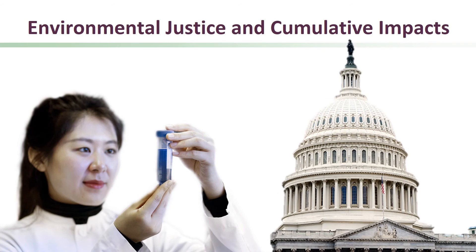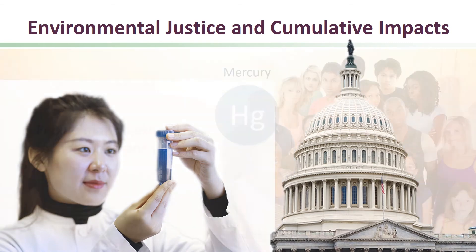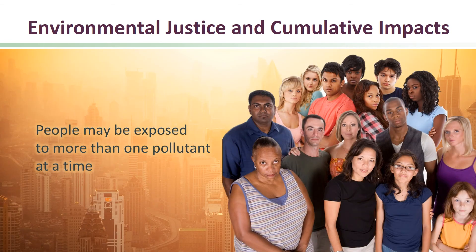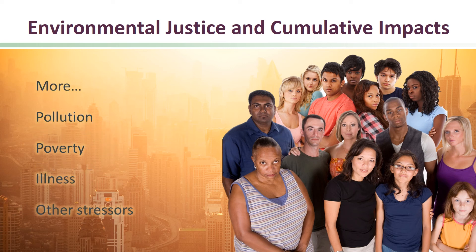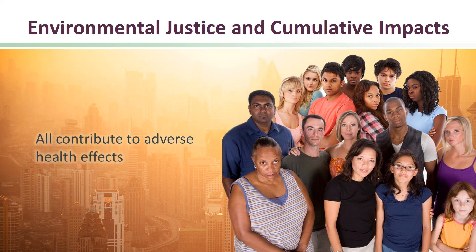Scientists and governments often look at chemicals in the environment one at a time. In the same way, lawmakers frequently regulate sources of pollution individually. But people may be exposed to more than one source of pollution at a time. People of color and low-income people are more likely to live near multiple sources of pollution. Not only are these communities often exposed to more pollution, but poverty, unemployment, and other conditions that cause stress can contribute to adverse health effects.